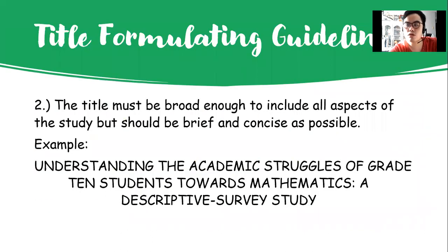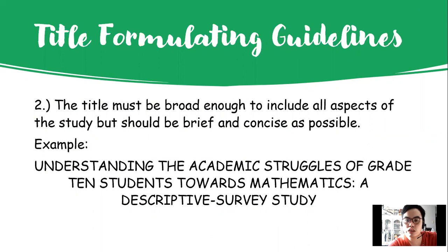Based on the second guideline, the title must be broad enough to include all aspects of the study — the research problem and the respondents. It doesn't have to be very general or very specific, but it should be brief and concise. The readers must understand the title itself — it should be clear and not confusing. Even just one variable is okay, as long as there is focus in your research.